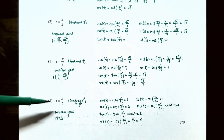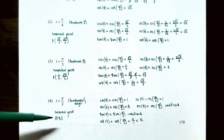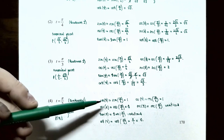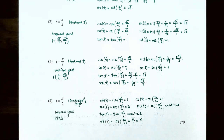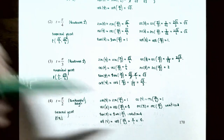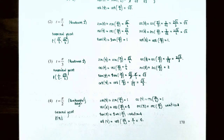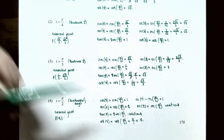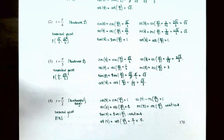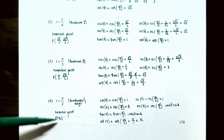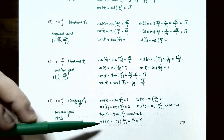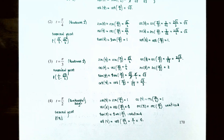For T equals pi over 2, or 90 degrees, the terminal point is (0, 1). Sine of pi over 2 is 1. Cosine of pi over 2 is 0. Tangent of pi over 2 is y divided by x: 1 divided by 0, which is undefined. Cosecant of pi over 2 is 1 divided by y: 1 divided by 1 = 1. Secant of pi over 2 is 1 divided by x: 1 divided by 0, which is undefined. Cotangent of pi over 2 is x divided by y: 0 divided by 1 = 0.